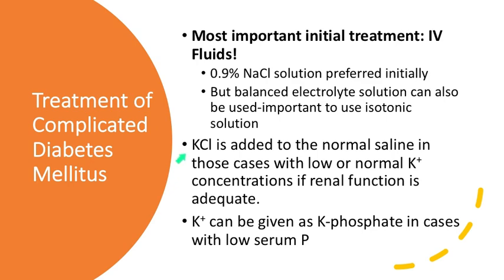As you go further into treatment and rehydrate the animal, potassium chloride is added to normal saline in cases where you've identified lower normal potassium levels, particularly if renal function is adequate. Later on in treatment, potassium can be given as potassium phosphate, particularly if you diagnose a low serum phosphate, as is often the case in diabetic ketoacidosis.